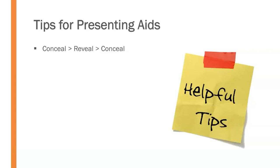Or it could just mean covering up your poster board or turning it around in some way. So whatever method you need, please use the conceal-reveal-conceal method to help keep the audience from being distracted by your presentational aid during the portions of your speech where you're not referring to it. Do be sure that you explain and reference your aids. Don't just put something up on a table or on a slide and expect people to understand what it is without ever explaining why it's there. You ought to be explaining and referencing your visual aids when they are available and visible.